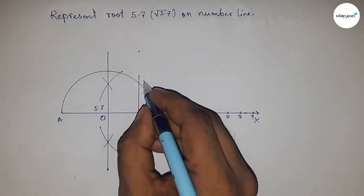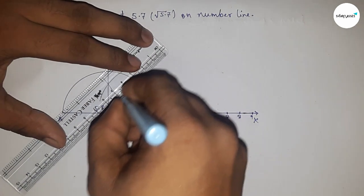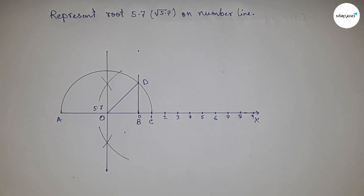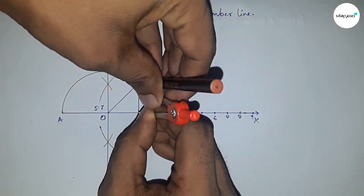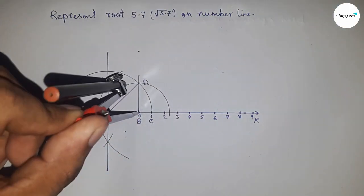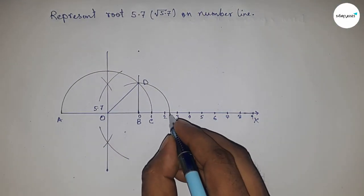We join O and D. Now, taking the distance or length BD with a compass, we draw an arc which meets the number line at point P.